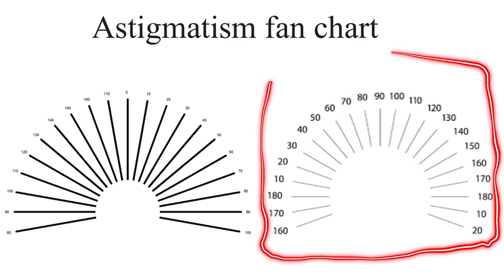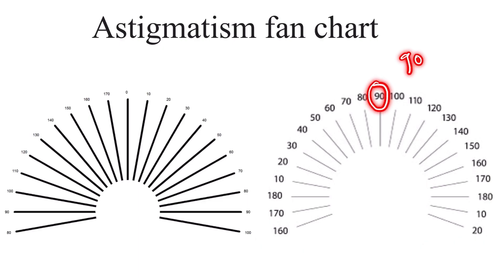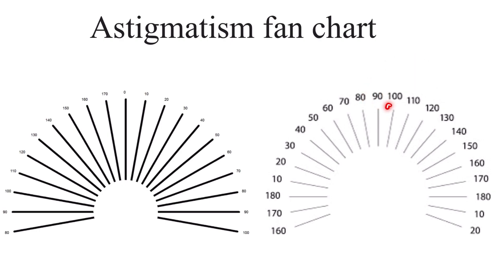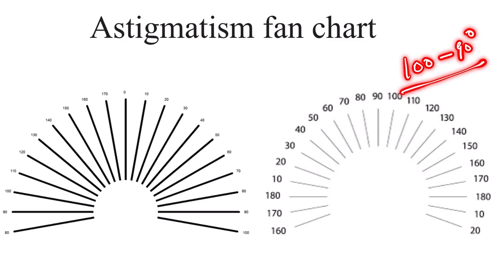If you are using a chart where the actual line orientation in degrees is given rather than the cylindrical axis, you can easily find the correcting cylindrical axis by deducting or adding 90 degrees. If the number is below 90, you add 90 to it. If it is above 90, you subtract 90 from it. For example, if the patient is seeing a line clearly at value 100, you subtract 90 degrees and place your correcting cylindrical axis at 10 degrees.